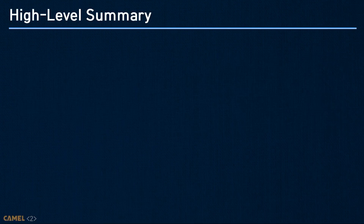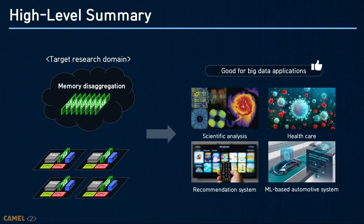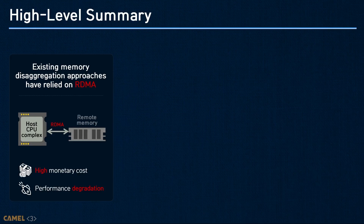Before moving on to the main talk, I will give you a high-level summary. Our work's main research target is memory disaggregation, which can satisfy large memory requirements of various big data applications. Existing memory disaggregation uses RDMA, but RDMA requires high monetary cost for specialized network interface cards and switches, and it also degrades application performance because of microsecond-level memory access latency.